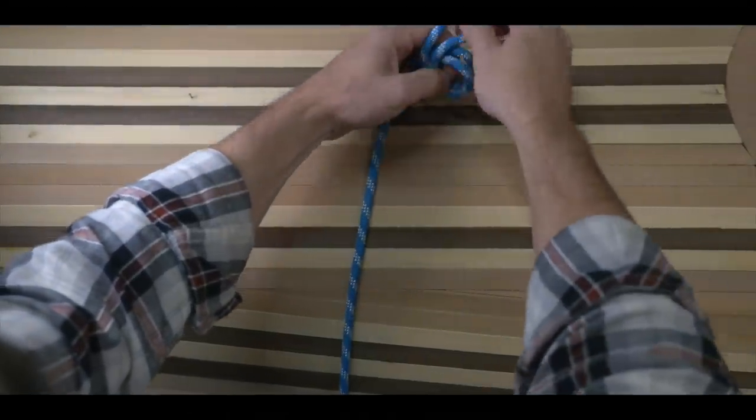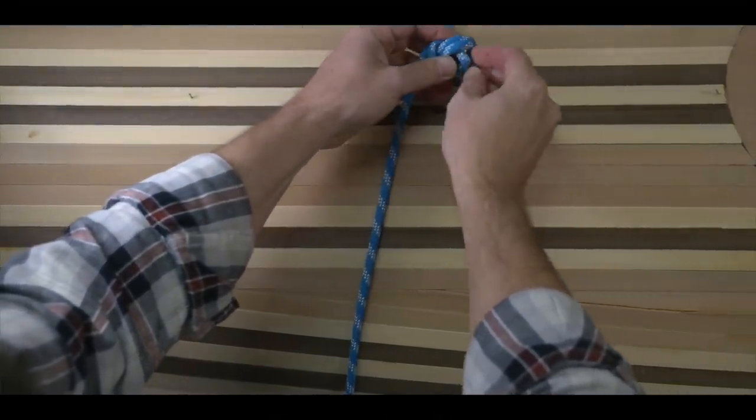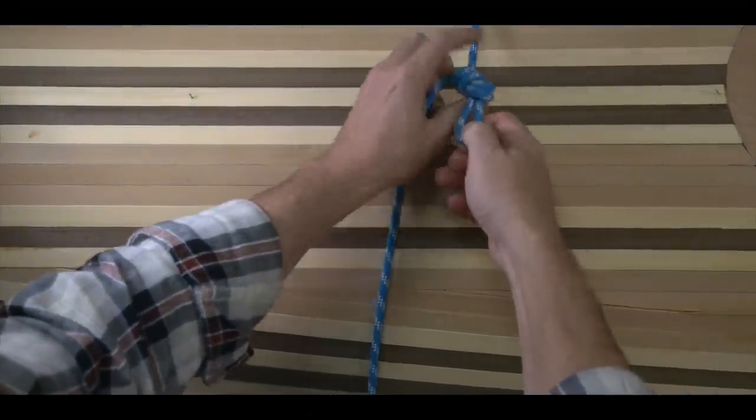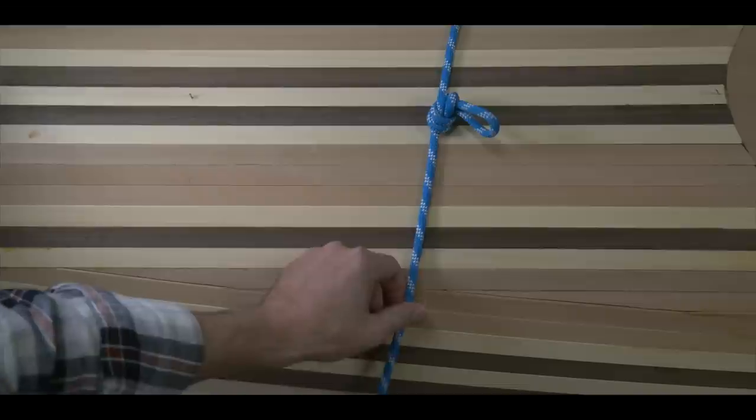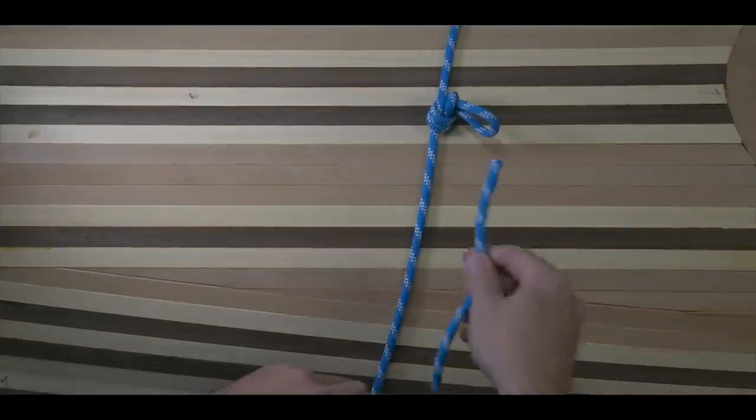The trucker's hitch is an important knot to know and can be used not only to secure a load on a trailer or tie down a canoe, but can also be used around camp to set up a ridge line for your tarp. For those reasons, it's probably the most important hitch there is.